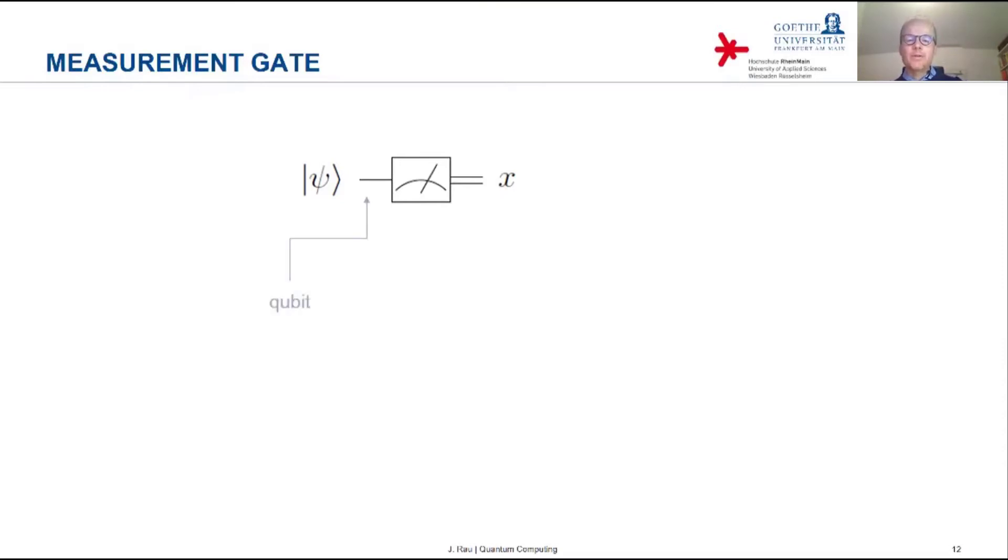It has as its input a qubit, so a quantum state. And the output, then you perform a measurement in the standard basis. And the output is then one of the two possible results. Either the result corresponding to the basis state zero or the result corresponding to the basis state one. So the output is a zero or a one, and that's a classical bit. So the measurement gate basically ends the quantum domain and then translates a quantum bit into a classical bit.